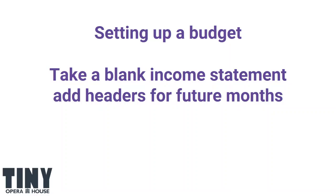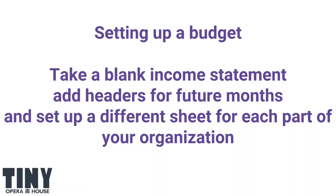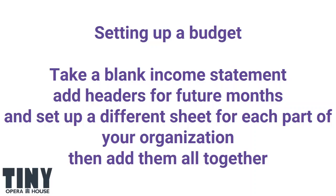Taking a blank income statement and looking at future months for it, creating a different sheet for each little part of the organization — this flows through to your reporting as well. If you think of your organization as having three main programs, those three main programs are going to be what you budget on. They're also going to be what you ultimately report financially on so that you can track the difference between your projections and how things worked out in the real world. And then you just add them all together — that's how you come up with a budget for the whole organization by starting with budgets for the little pieces of it.